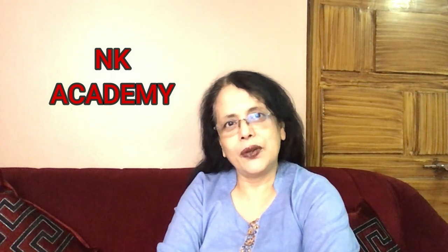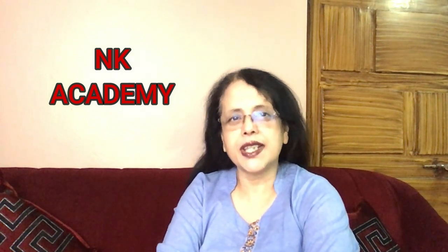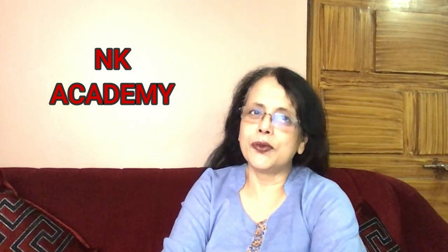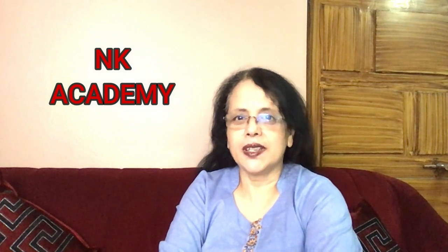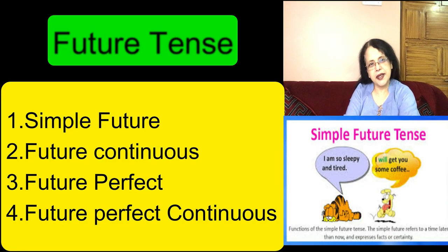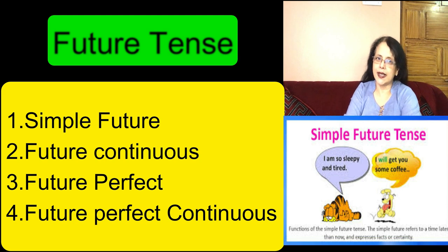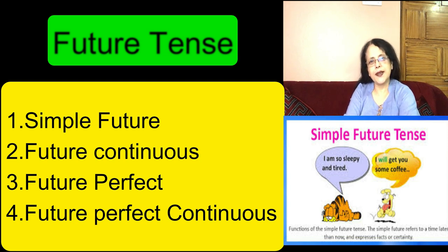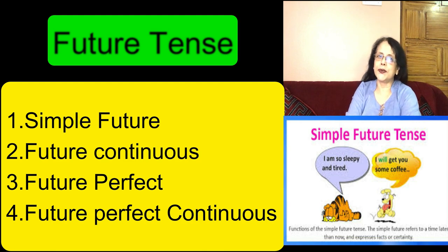Till now, we have learned present tense as well as past tense with all their aspects. Now let's move on to future. Just like present tense and past tense, future tense also has four aspects. And what are they? Simple future, which is also known as future simple, then future continuous, future perfect, and future perfect continuous.